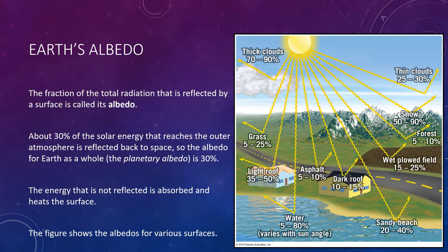This figure shows the albedos for various surfaces. Note that the angle at which the sun's rays strike the water surface greatly affects the albedo value — water can range from 5 to 80% reflected back. The energy that is not reflected is absorbed and heats the surface. If Earth did nothing but absorb radiation from the Sun, it would continuously get hotter until the surface temperature became high enough to melt rock. The darker your material, the more it absorbs; the whiter your material, the more it reflects. For example, asphalt reflects only 5 to 10%, while snow cover can be up to 90%.